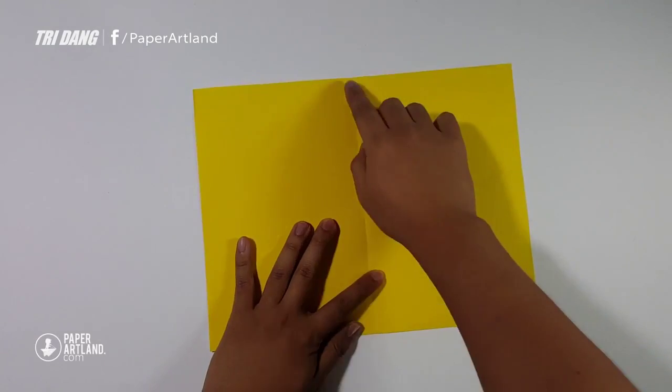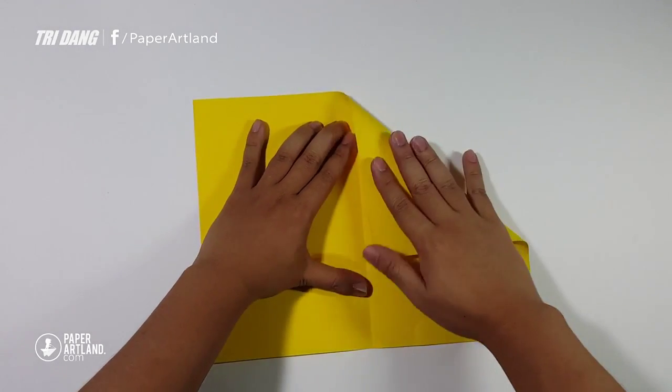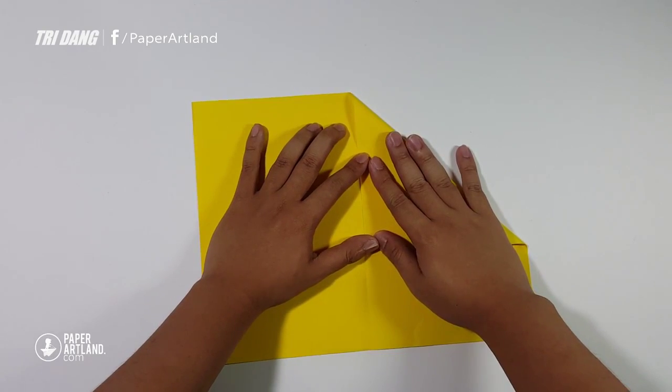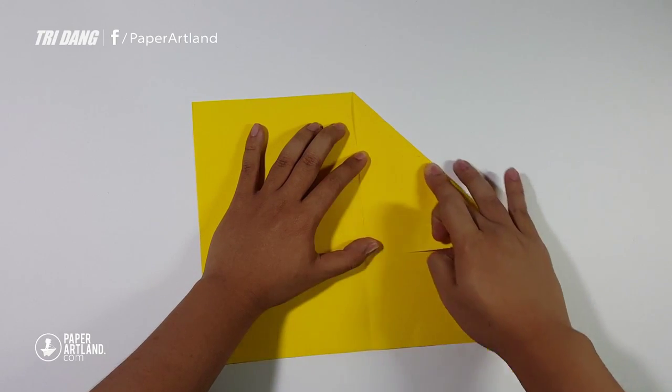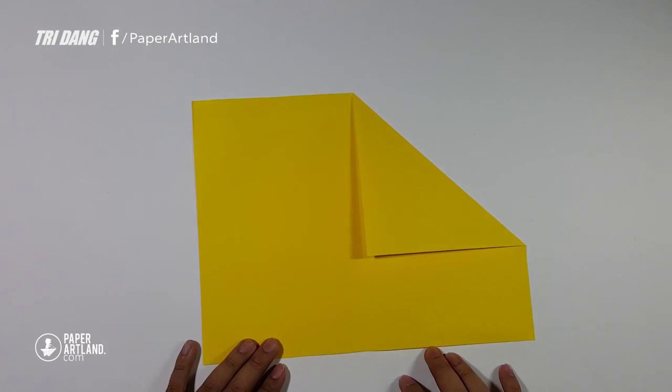Now, start from this top edge, fold to the center crease. And repeat the same fold for the opposite side.